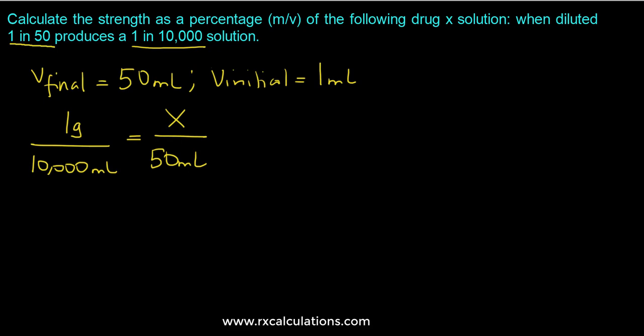So if we solve for the unknown which is x we'll end up with 1 gram times 50 ml divided by 10,000 and so that would imply that your x is going to be equal to 0.005 grams.